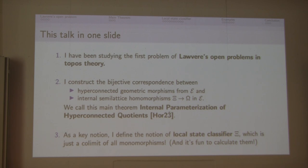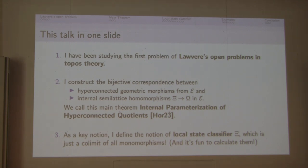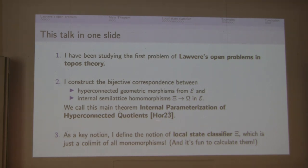Let me summarize what I will talk about. First, I will study the first problem of Lawvere's open program in topos theory, which is called quotient topos. Second, I will talk about the construction of a bijective correspondence between hyperconnective geometric morphisms from a given topos — which I will call hyperconnective quotients — and internal synergistic homomorphisms from Ω (the sub-object classifier) in a given topos. We call this main theorem the internal parameterization of hyperconnective quotients.